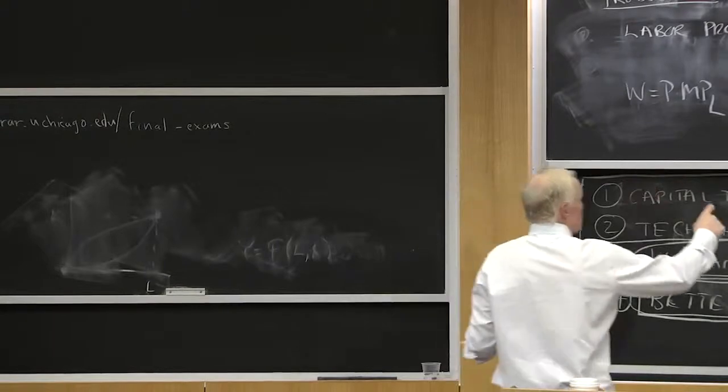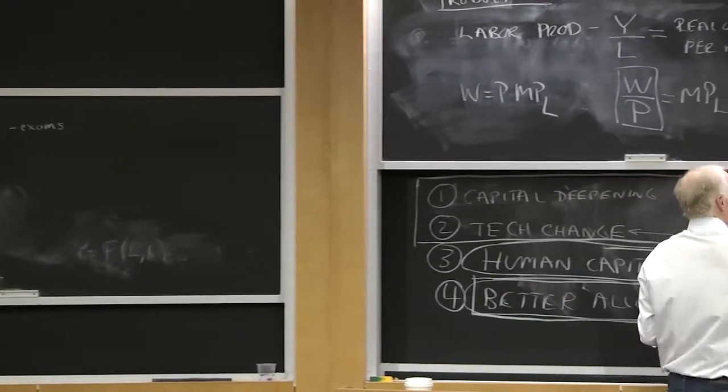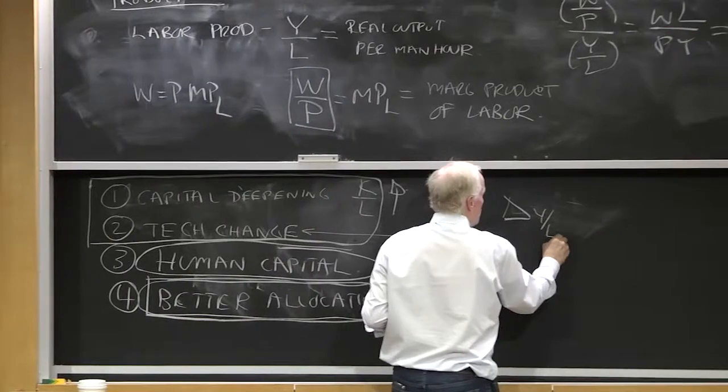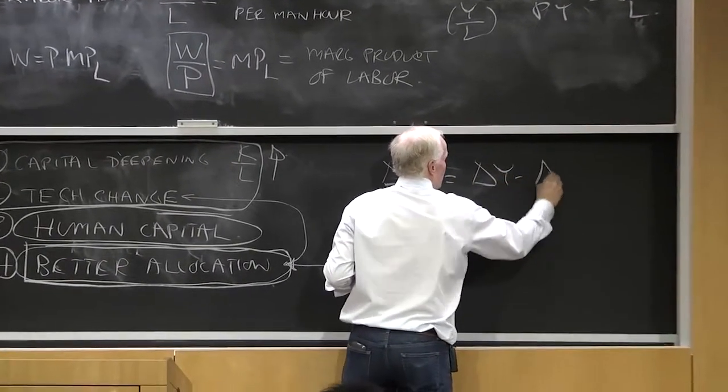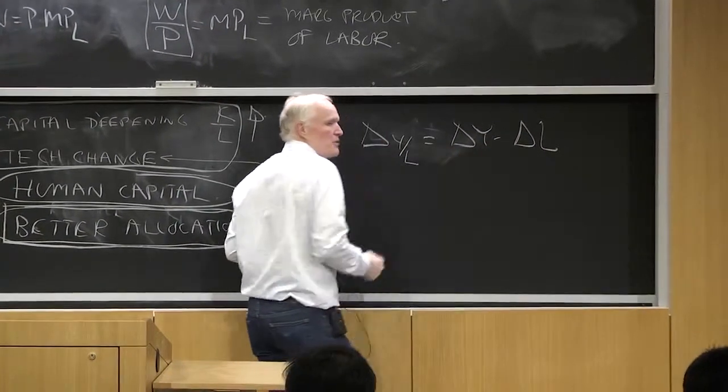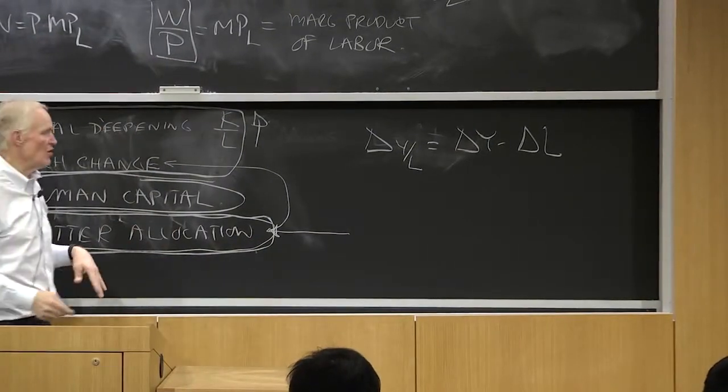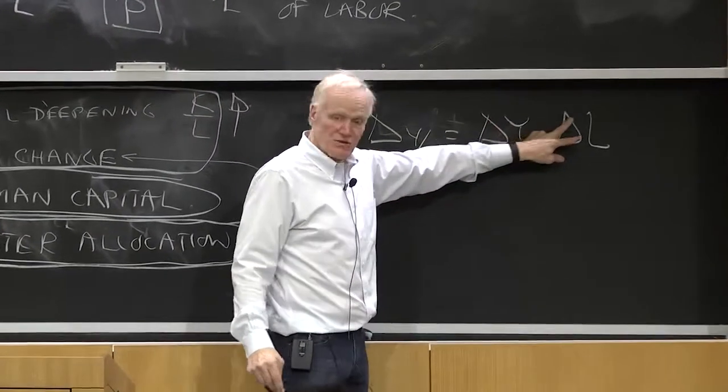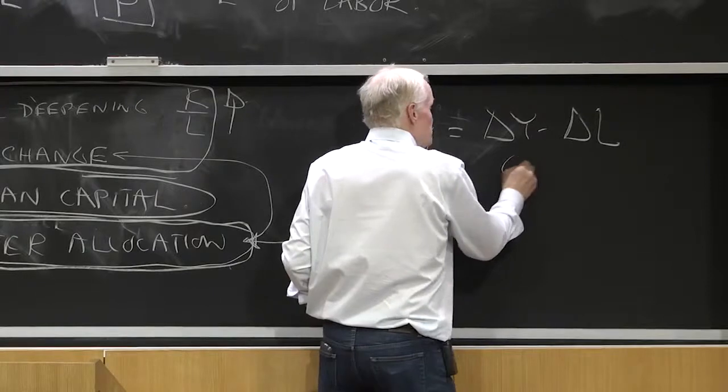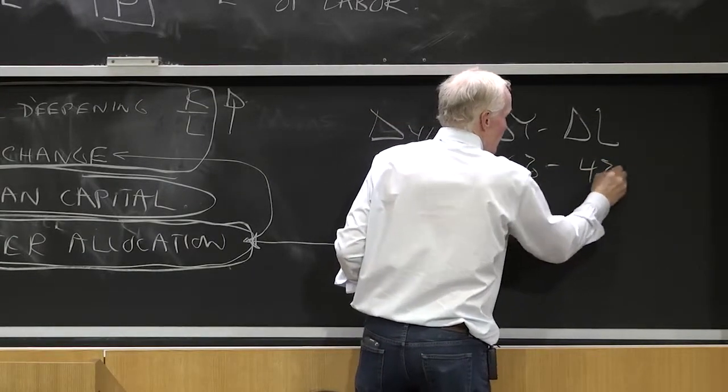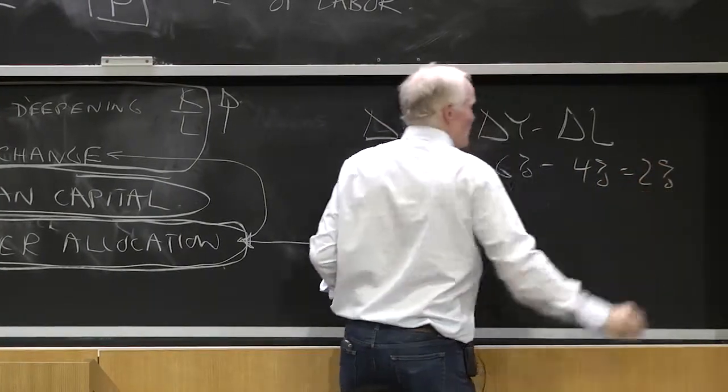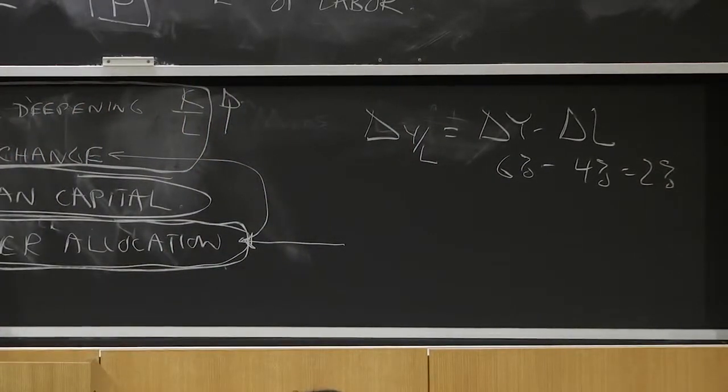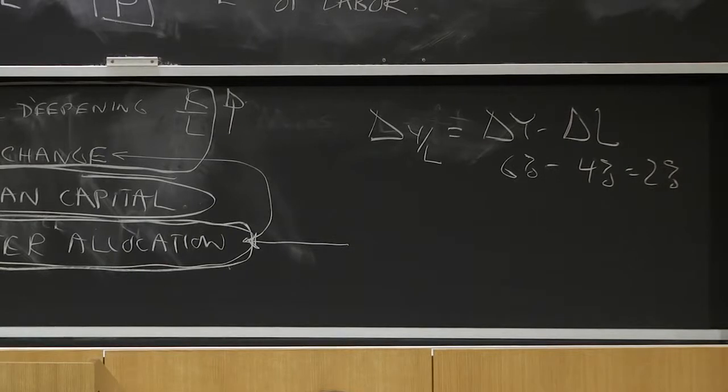You can think of labor, growth in labor productivity. Growth of Y over L is delta Y minus delta L, where I use this delta symbol to mean percentage change or D log or change in logs. So the change in the ratio of Y over L is just the growth in output minus the growth in labor. If output went up 6% and labor went up 4%, we'd say labor productivity went up 2%. We got 6% more output with only 4% more labor, we must have got the 2% from somewhere else. That's the growth in labor productivity.